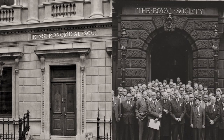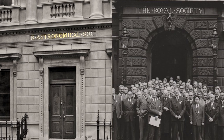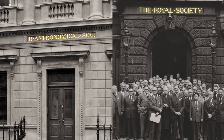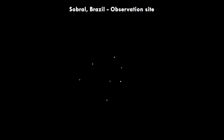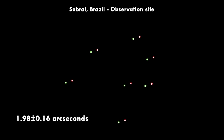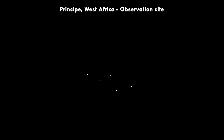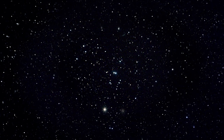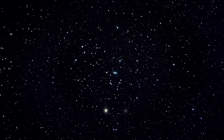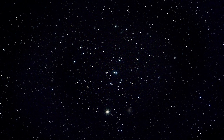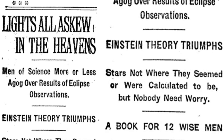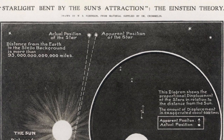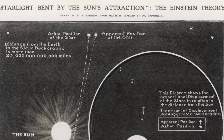In November 1919, the results were shared at a joint meeting between the Royal Astronomical Society and the Royal Society of London. The Sobral team measured 7 stars in good visibility at a deflection of 1.98 ± 0.16 arcseconds. The Principe team measured 5 stars in subpar conditions at a deflection of 1.61 ± 0.40 arcseconds. Both results were within two standard errors of Einstein's value, and more than two standard errors from the Newtonian value. Einstein was correct, and his theory of general relativity was eventually accepted, making Albert Einstein a household name.